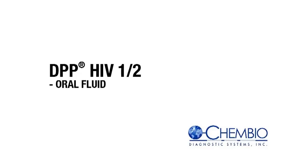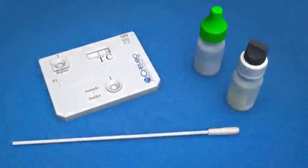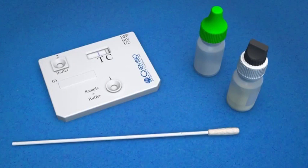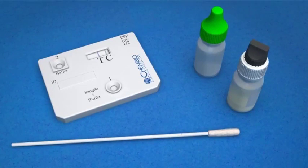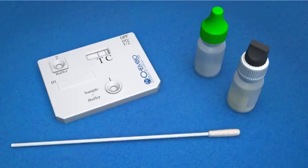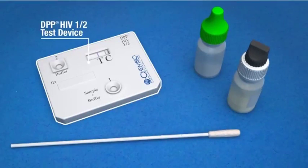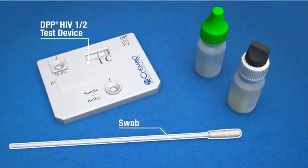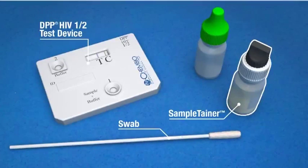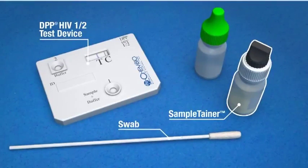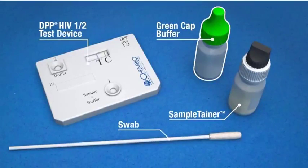DPP-HIV-1 and 2 Instructions for Oral Fluid. The DPP-HIV-1 and 2 assay for oral fluids contains the following components: the DPP test device, an oral fluid collection swab, a black cap sample tainer for diluting oral fluid specimens, and a green cap running buffer bottle.